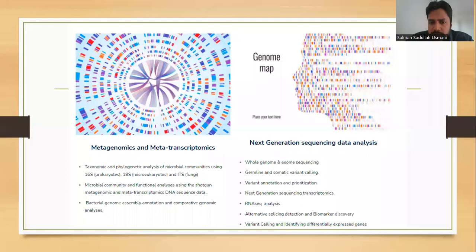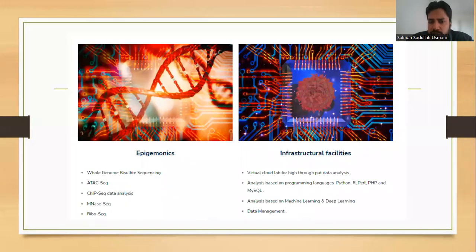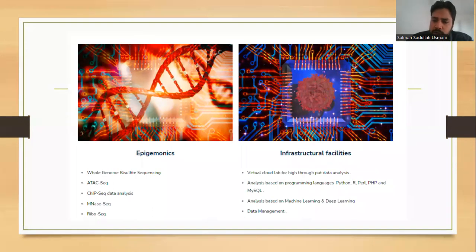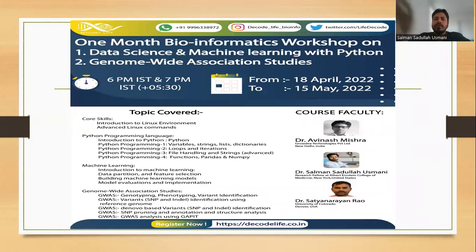IT analytics is also provided, as well as metagenomic, metatranscriptomic, and NGS data analysis. If you are working on taxonomic or pathogenic analysis, whole genome or exome sequencing, RNA-seq analysis, or variant calling and want outsourcing services, you can contact Decode Life. We also provide outsourcing services in the field of epigenomics. Our infrastructure includes a virtual cloud lab for high-throughput data analysis and experts in Python, R, and Perl.